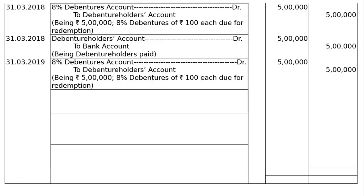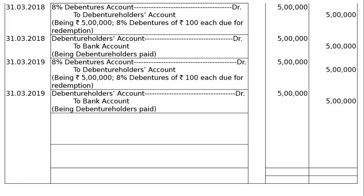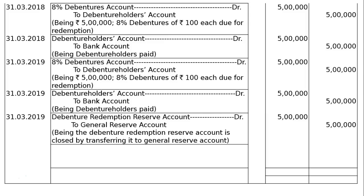On 31st March 2019: 8% Debentures account debited to Debenture Holders account — Rs 5,00,000 in debit and credit — being 8% debentures of Rs 100 due for redemption. Payment: Debenture Holders account debited to Bank account — Rs 5,00,000. Next: Debenture Redemption Reserve account debited to General Reserve account — Rs 5,00,000 in debit and credit — being Debenture Redemption Reserve account closed by transferring to General Reserve account.